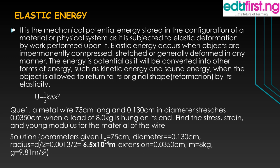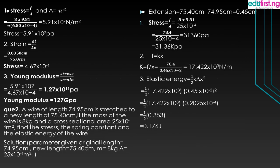The acceleration due to gravity is 9.81 meters per second squared. Stress equals force over area. We are given the mass and the acceleration due to gravity, and the area can be calculated using pi r squared. So 8 multiplied by 9.81 divided by pi r squared gives a stress of 5.9 times 10 to the power 7 Newton per meter squared, which is also Pascal. The strain is change in length over original length, and punching the calculator gives 4.67 times 10 to the power minus 4.